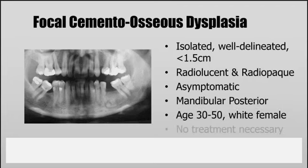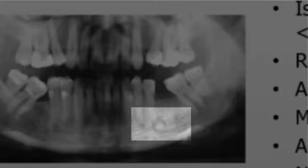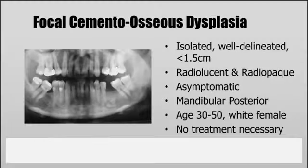Focal cementoosseous dysplasia is similar to periapical and florid but does have some identifying features. This one tends to be isolated, well-delineated, and less than one and a half centimeters in size. It tends to occur more commonly in white females between the ages of 30 to 50, and we would more likely see it in the posterior mandible. It is asymptomatic and does not require treatment; however, if we saw a lesion like this on a panoramic, it's important to refer to the oral surgeon for biopsy.